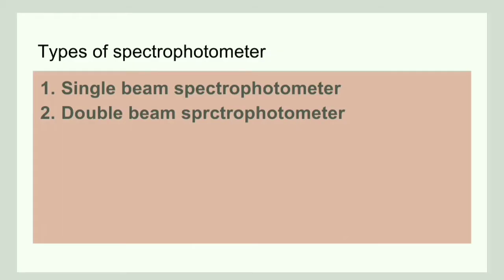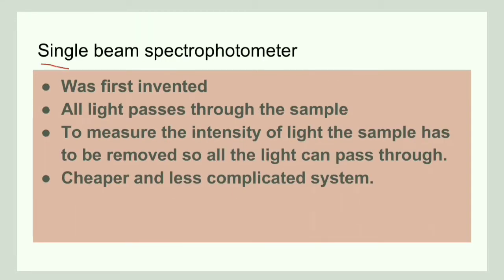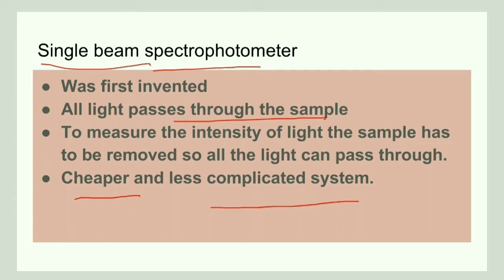Now let us discuss the types of spectrophotometer. There are basically two types: single beam spectrophotometer and double beam spectrophotometer. The single beam spectrophotometer was invented first; all the light passes through the sample. There is only one path of light, making it a cheaper and less complicated system than the double beam spectrophotometer.